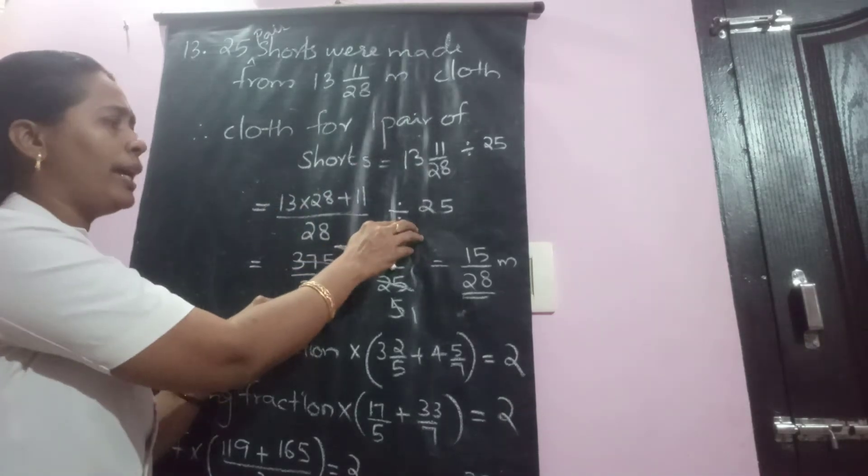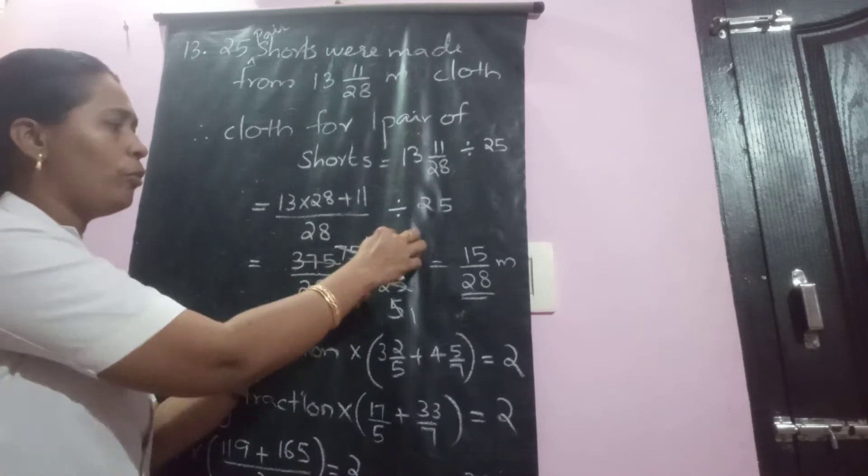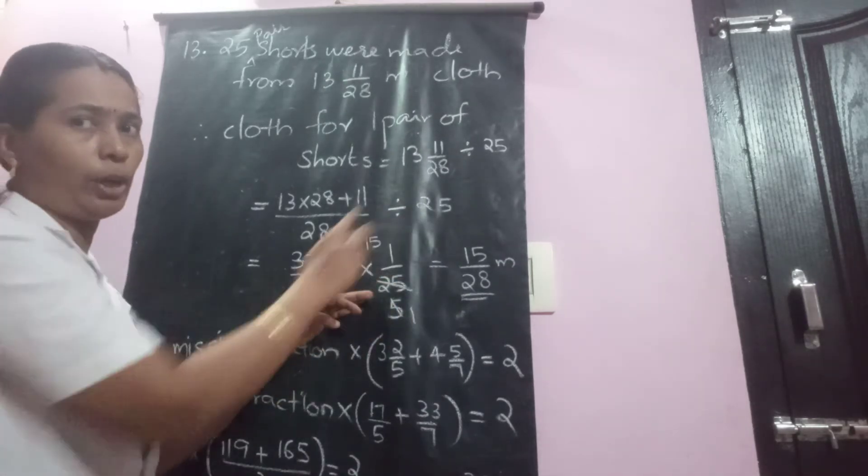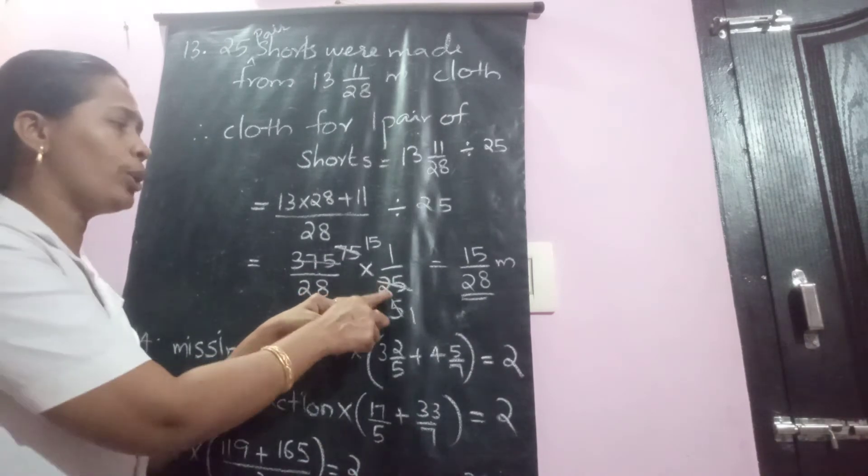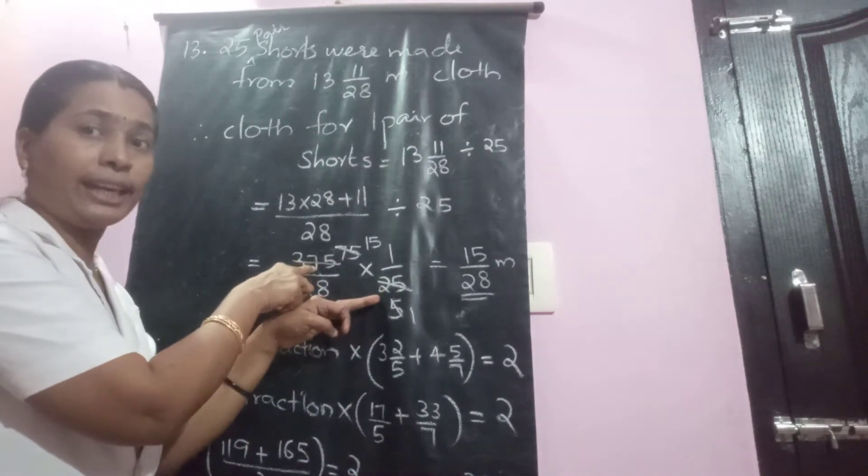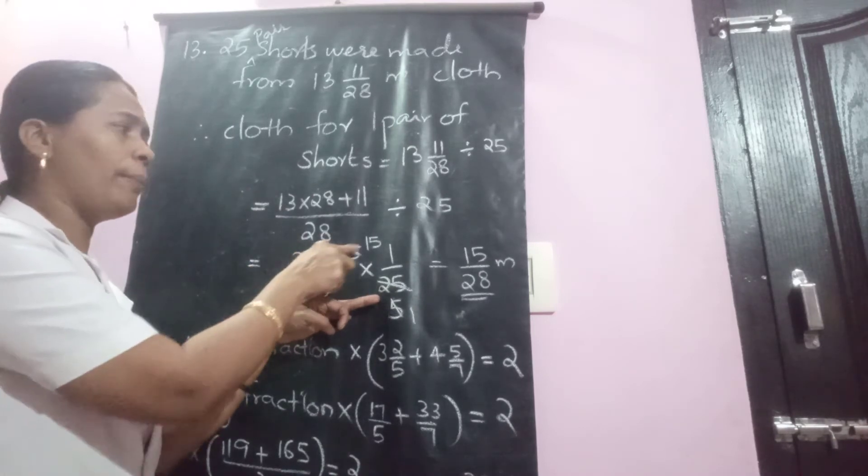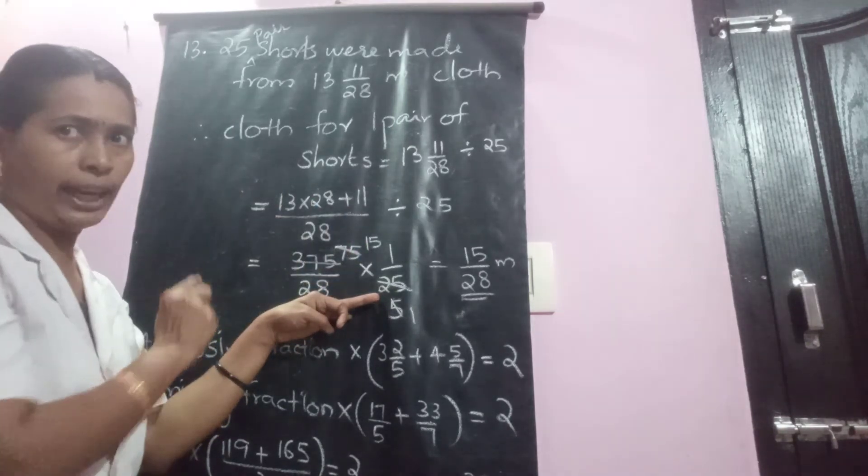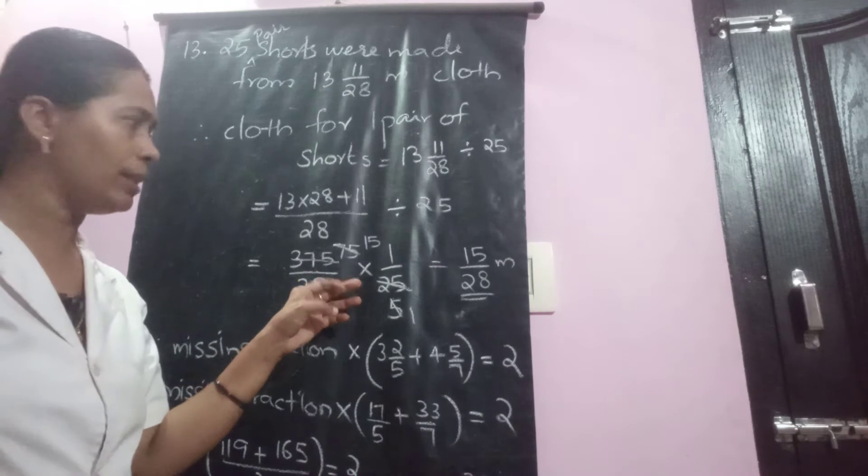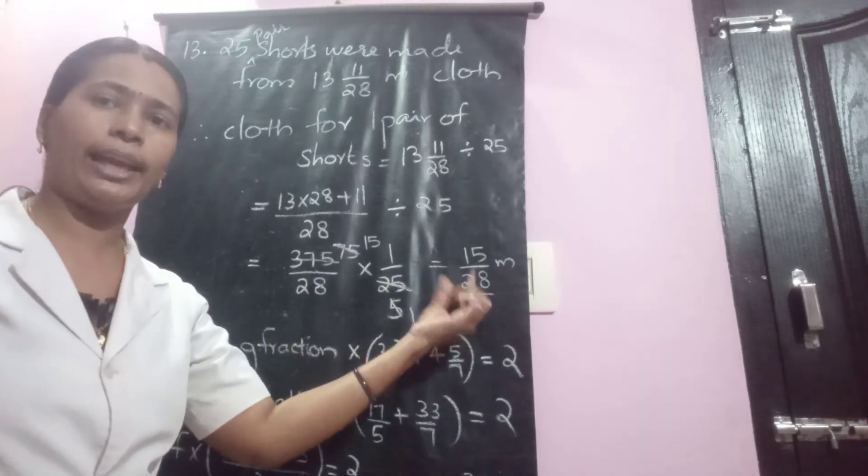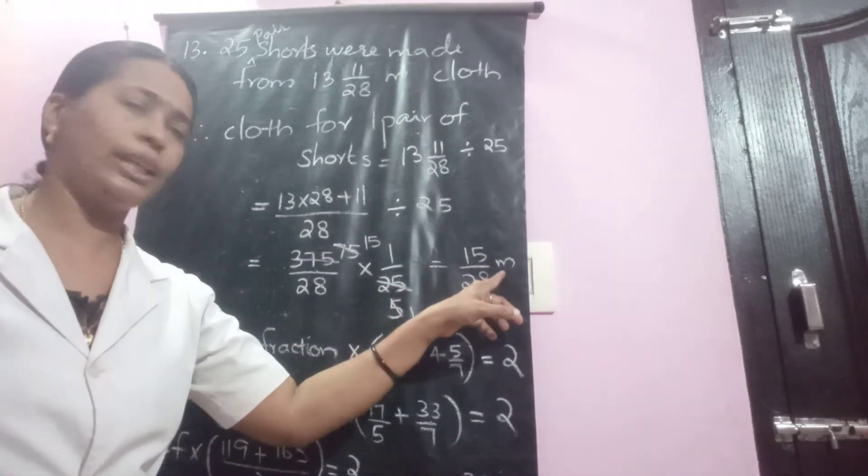That is 375 by 28, then divided by 25 changed into 1 by 25. What's the reciprocal of 25? 1 by 25. For 25 and 375 we can cancel directly. 25 one time, and this number 15 times. So what is remaining for us? 15 by 28, and the unit is meter.